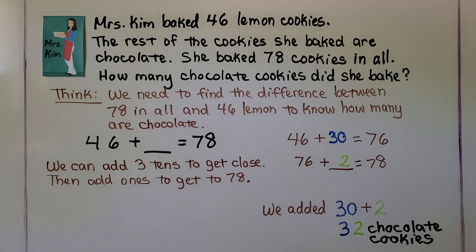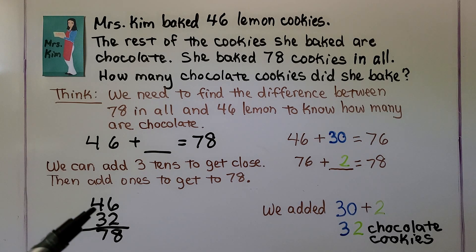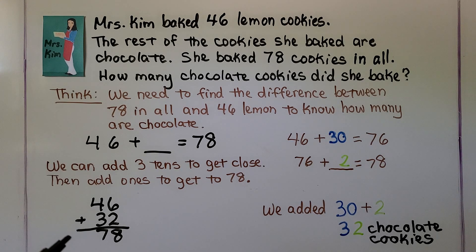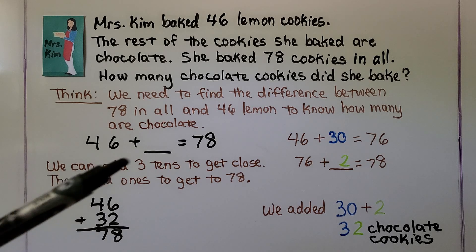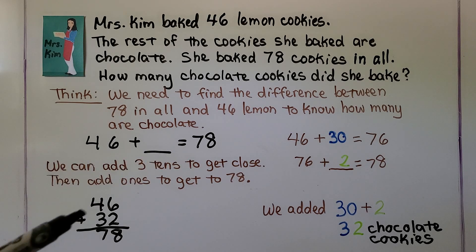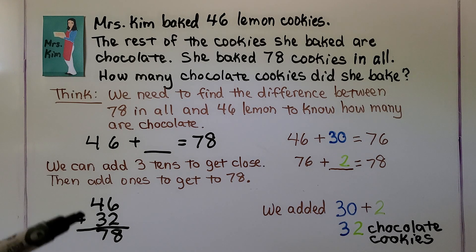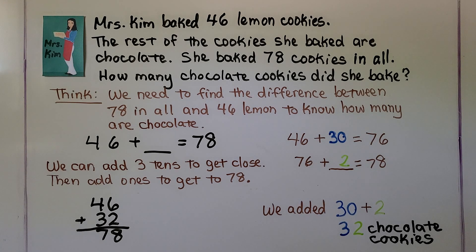There are 32 chocolate cookies. We can check by adding 46 plus 32: 6 ones plus 2 ones is 8 ones, and 4 tens plus 3 tens is 7 tens. Yes, it's equal to 78. We got it right.